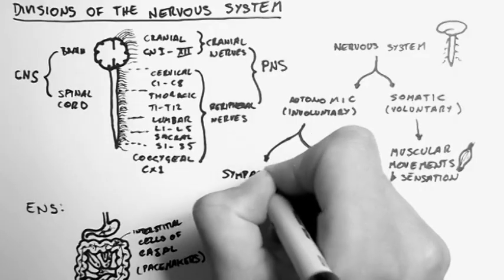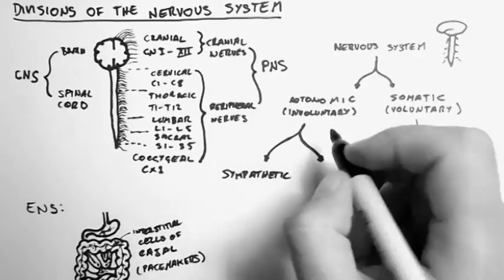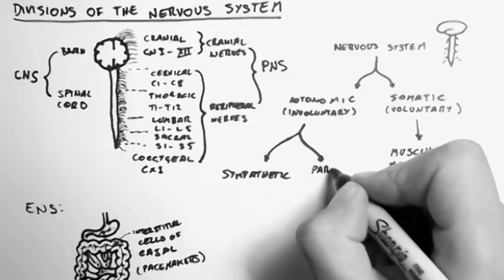Now the autonomic nervous system looks after all our organs, which we don't control consciously. And there are two branches of the autonomic nervous system. The sympathetic, and the parasympathetic nervous system.